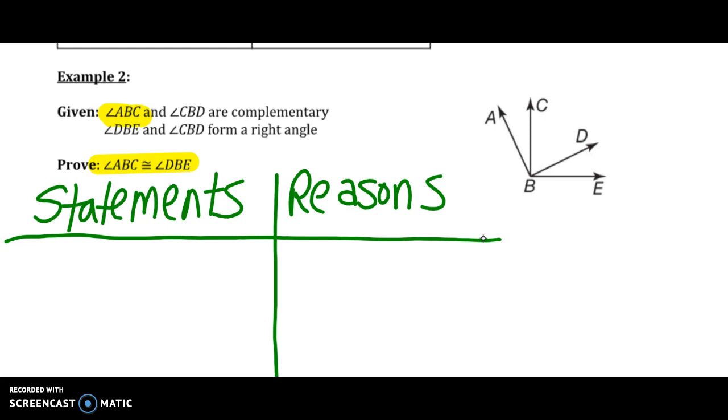Let's annotate our diagram. We have these angles that are being named with three letters. I'm just going to call this one, two, and three. ABC is angle 1, CBD is angle 2, and DBE is angle 3.